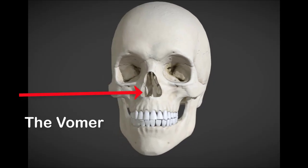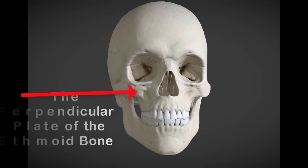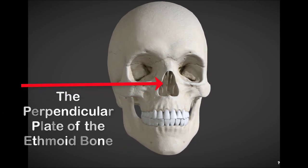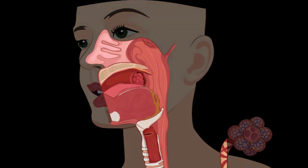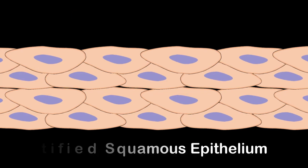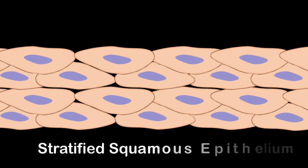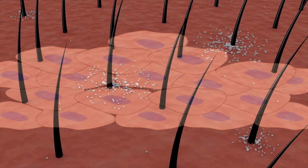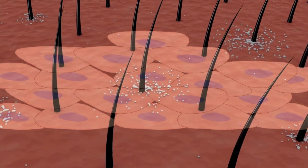The dividing wall is a vertical plate called the nasal septum and is composed of hyaline cartilage and bone. The vomer forms the inferior part of the septum, whereas the perpendicular plate of the ethmoid bone forms the superior part. The nasal cavity begins with a small dilated chamber called the vestibule that lies just inside the nostril. This space is lined with stratified squamous epithelium like facial skin and has guard hairs or vibrosae that block debris from entering the nose.